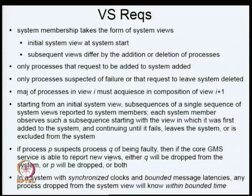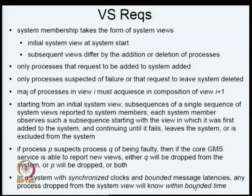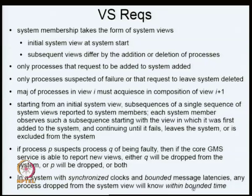The sequence of system views forms a single global sequence reported to system members. Each process P observes a subsequence starting with the view in which it was first added, continuing until it fails, leaves, or is excluded. If the group membership service is able to report new views, either Q will be dropped from the system or P will be dropped, or both. In a system with synchronized clocks and bounded message latencies, any process dropped from the system view will know within bounded time.